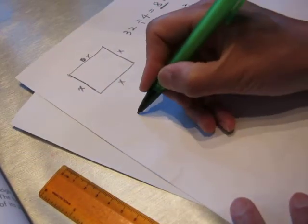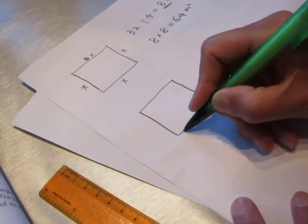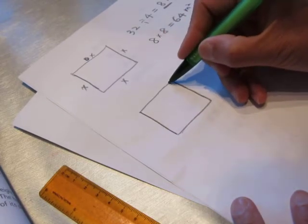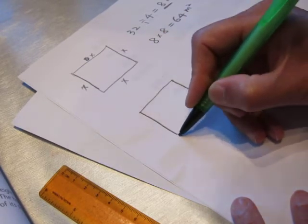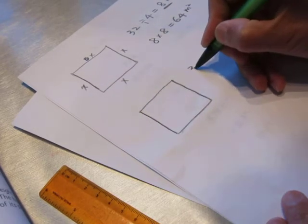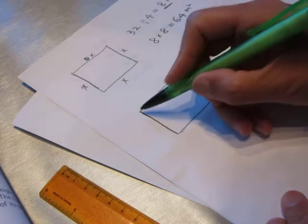I will explain it in Chinese again. So now we have a square. All sides are the same length. The perimeter is 32. Divide by 4 to find each side.